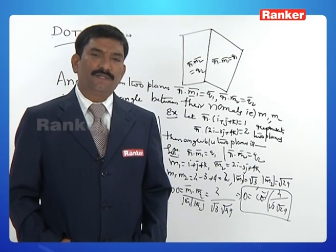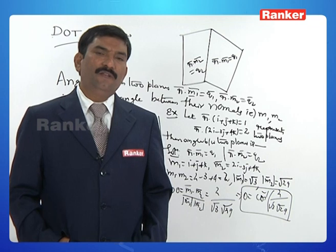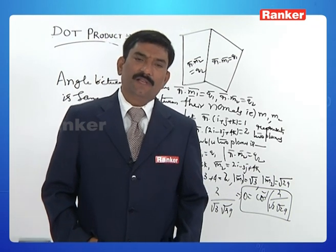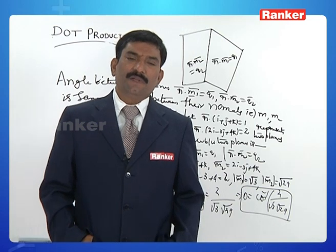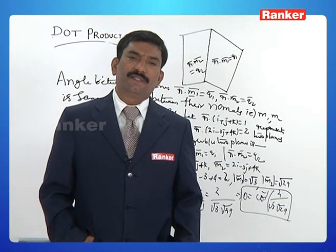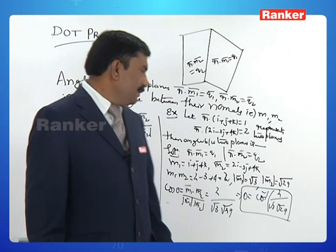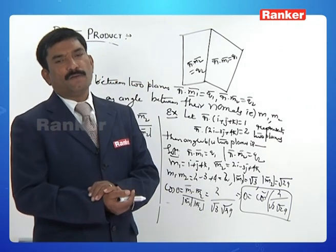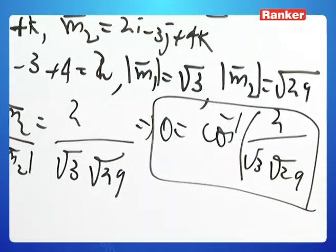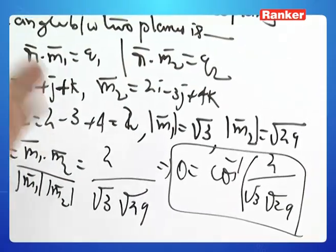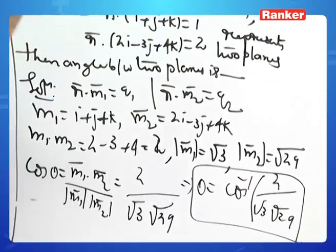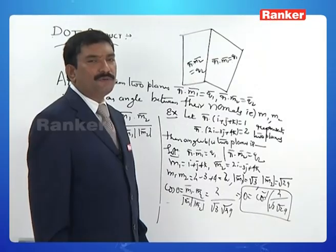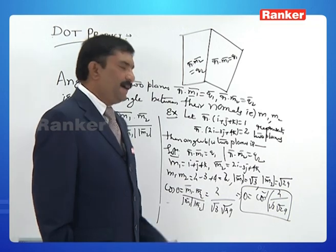Therefore the angle between the two planes is cos⁻¹(2 / √(3 × 29)). Always be cautious: the cos θ value you get must lie between minus 1 and 1. Here 2 over √87 is always less than 1, so the answer is valid. The angle between the two planes equals cos⁻¹(2 / (√3 × √29)).